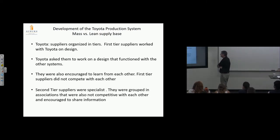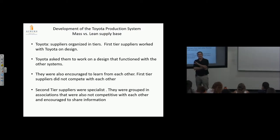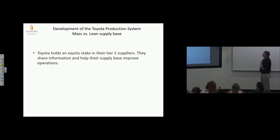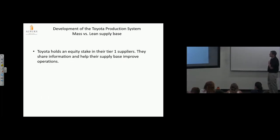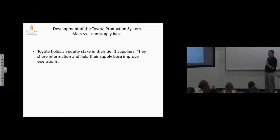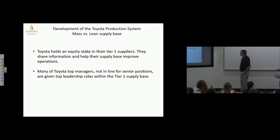Second tier suppliers were specialists, grouped in associations also not competitive with each other, encouraged to share information. The construction of this entire system goes beyond the assembly plant—it goes out to the supply base and encourages creativity in all aspects of the enterprise. People thinking, people solving problems. It goes back to Ono's comment—'We don't come here to make cars, we come here to think.' Toyota holds an equity stake in tier one suppliers. They share information and help their supply base improve operations—they're truly partners. Many of Toyota's top managers not in line for senior positions are given top leadership roles in tier one suppliers, putting their own people, well-trained and well-developed, in supplier locations to teach them how to manage these systems and improve.